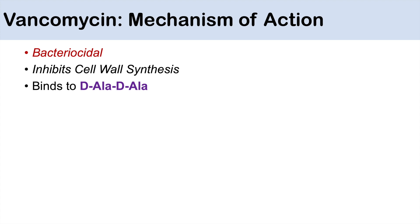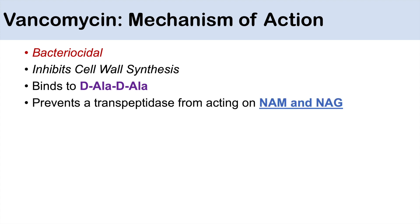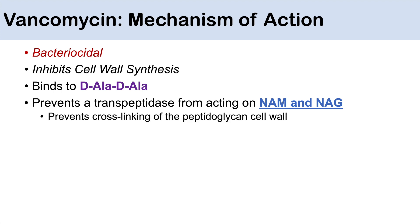How does it do that? It actually binds to D-Ala-D-Ala — that's the key mechanism of action to remember. When it binds to D-Ala-D-Ala, it prevents a transpeptidase from acting on NAM and NAG. NAM and NAG are the building blocks for peptidoglycan cell wall synthesis. So essentially, vancomycin prevents cross-linking of the peptidoglycan cell wall.